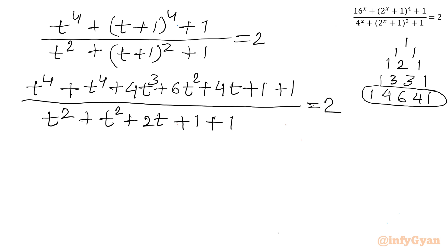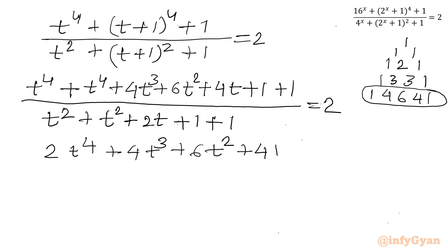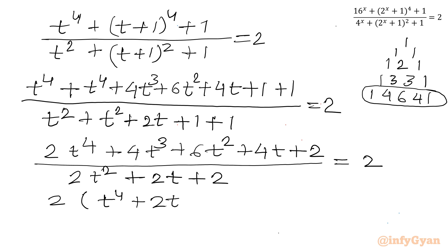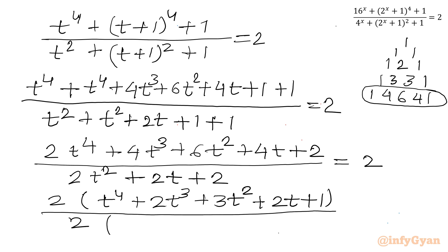Now let us simplify. Combining the numerator terms: 2t^4 + 4t^3 + 6t^2 + 4t + 2, and the denominator: 2t^2 + 2t + 2. We can take 2 common from numerator and denominator, giving numerator t^4 + 2t^3 + 3t^2 + 2t + 1 over denominator t^2 + t + 1, right-hand side equals 2.